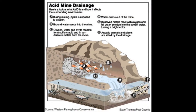Acid mine drainage forms when water becomes highly acidic due to chemical reactions occurring between surface or subsurface water and sulfur-bearing mineral rocks found inside of mines. Mining exposes large amounts of sulfur minerals which become oxidized and produce sulfuric acid. This acid then flows wherever uncontaminated water would usually flow and can leach heavy metals such as cadmium, copper, silver, and zinc out of rocks when it comes into contact with them.